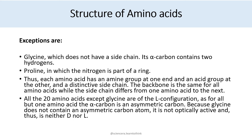All 20 amino acids except glycine are of the L configuration, as for all but one amino acid the alpha carbon is an asymmetric carbon. Glycine does not contain an asymmetric carbon atom; it is not optically active and thus is neither D nor L amino acid.